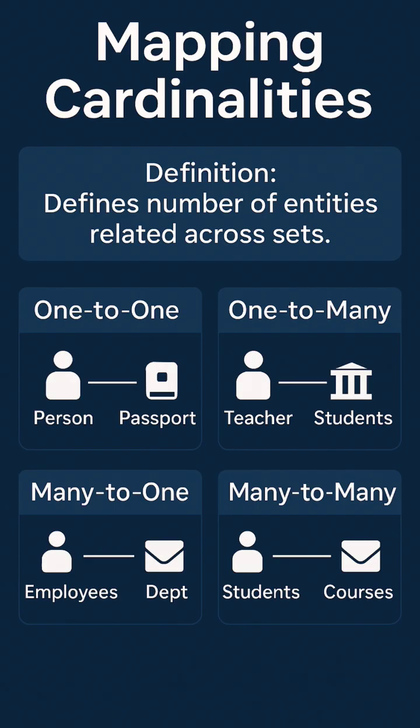Mapping cardinalities define how many entities participate in a relationship: one-to-one, one-to-many, many-to-one, or many-to-many. For example, one teacher may teach many students, or many employees may belong to one department.